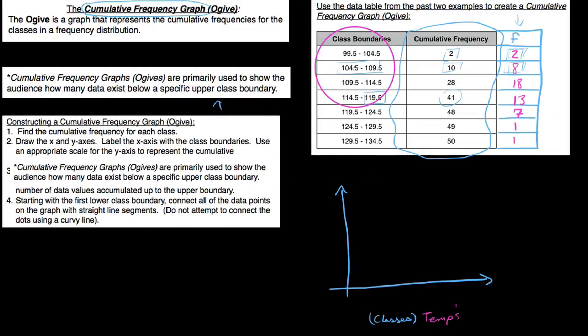Also this says label the x-axis with the class boundaries. So just like a histogram, we're going to use each of these numbers when we dress up the x-axis here. Our class boundaries: 99.5, 104.5, 109.5, 114.5.